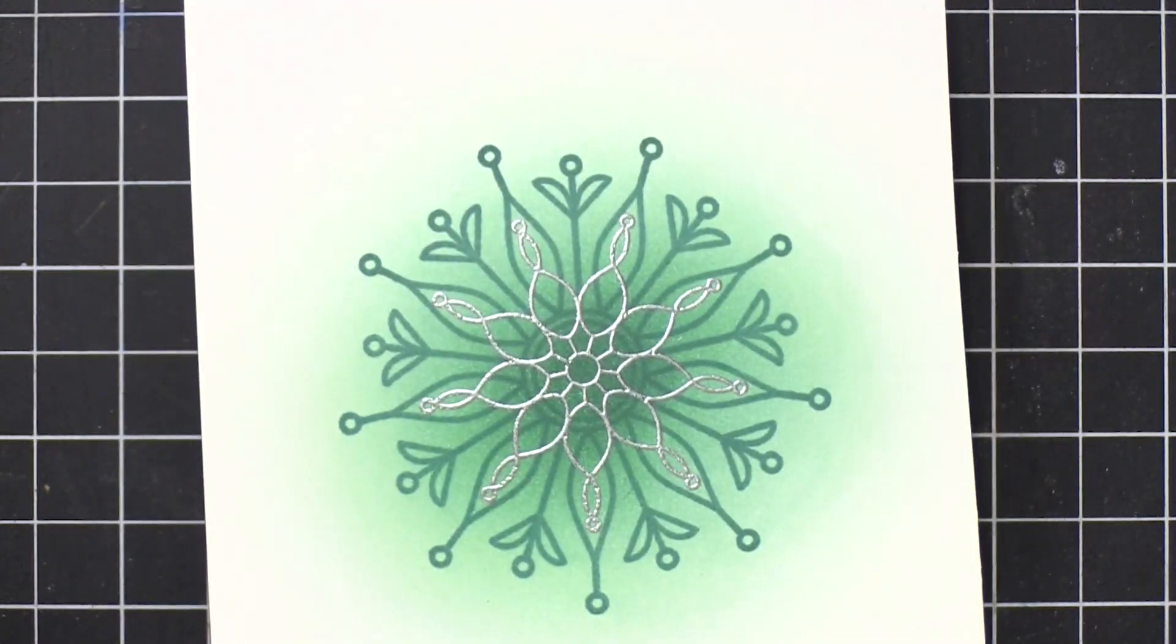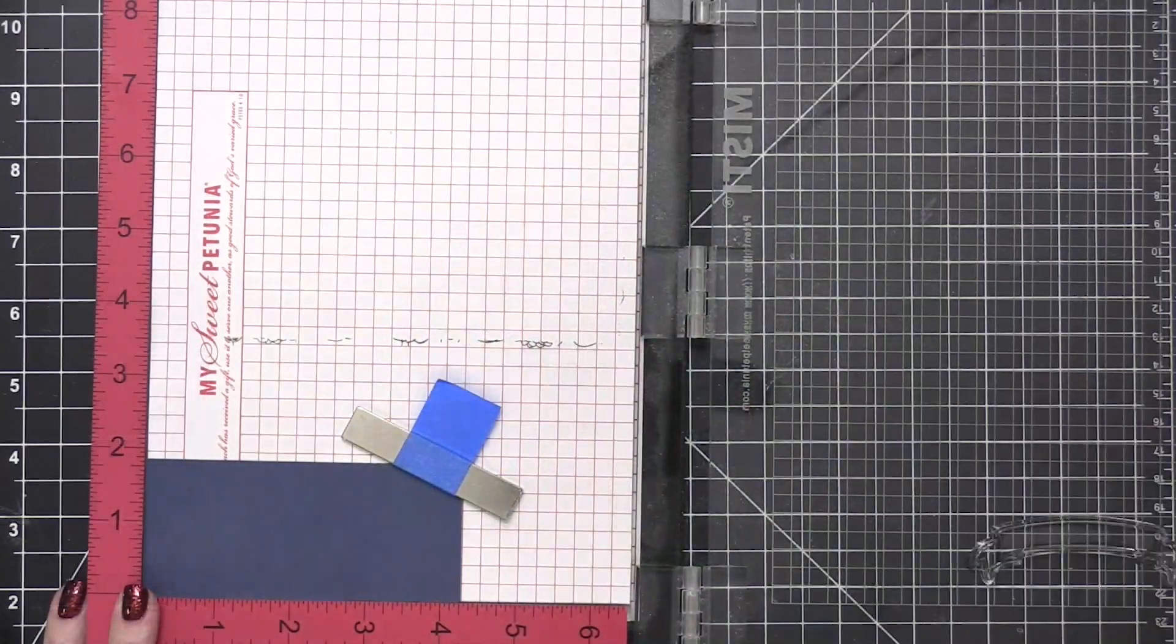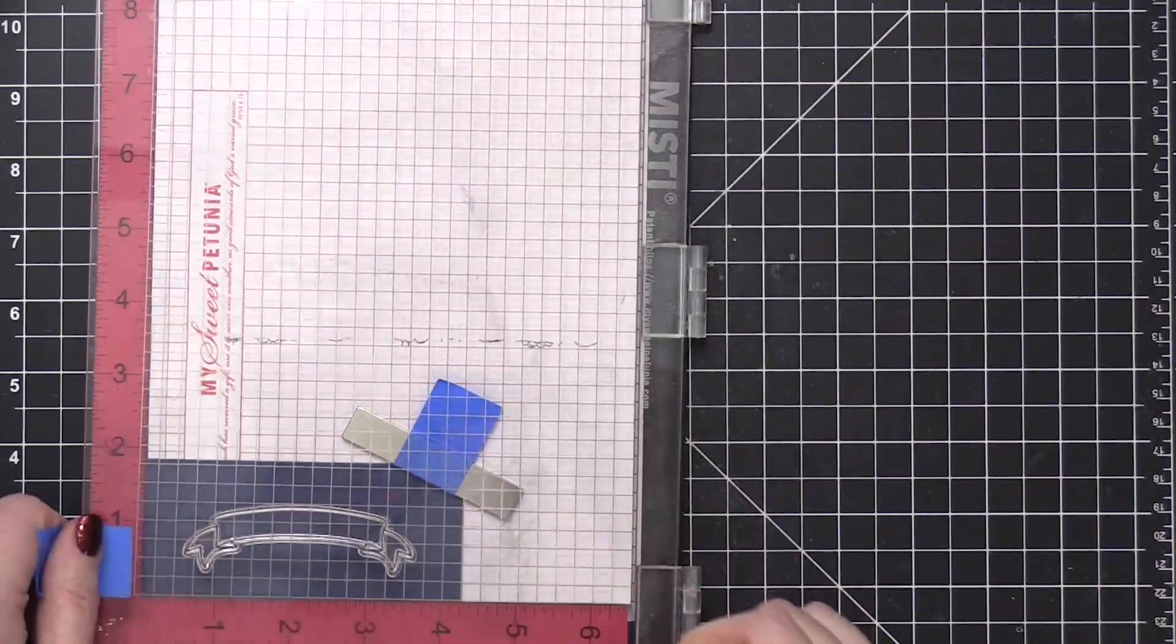So I used some sterling embossing powder from Brutus Monroe for the silver embossing. And then I heat set with my heat tool.